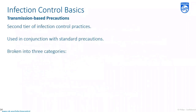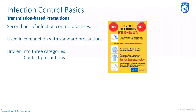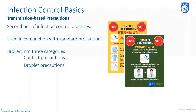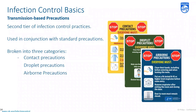The second tier of infection control practices beyond standard precautions is called transmission-based precautions. These are used in conjunction with standard precautions and are broken into three distinct categories: contact precautions, droplet precautions, and airborne precautions. We will now discuss each of these individually, beginning with contact precautions.